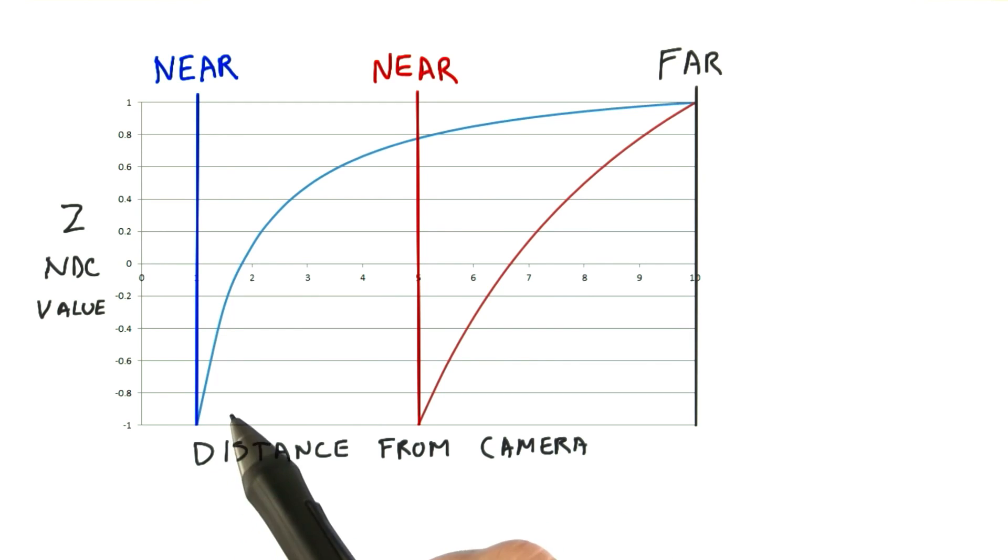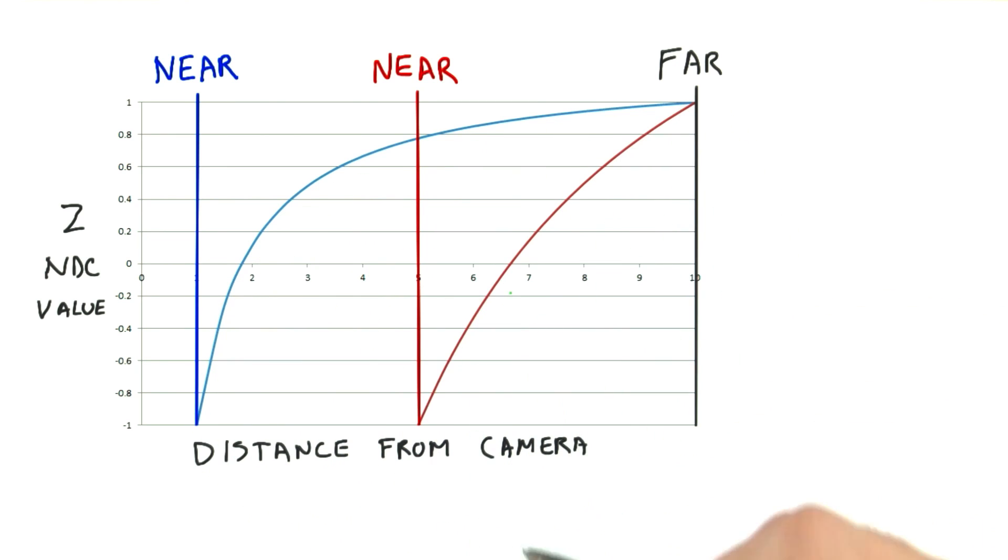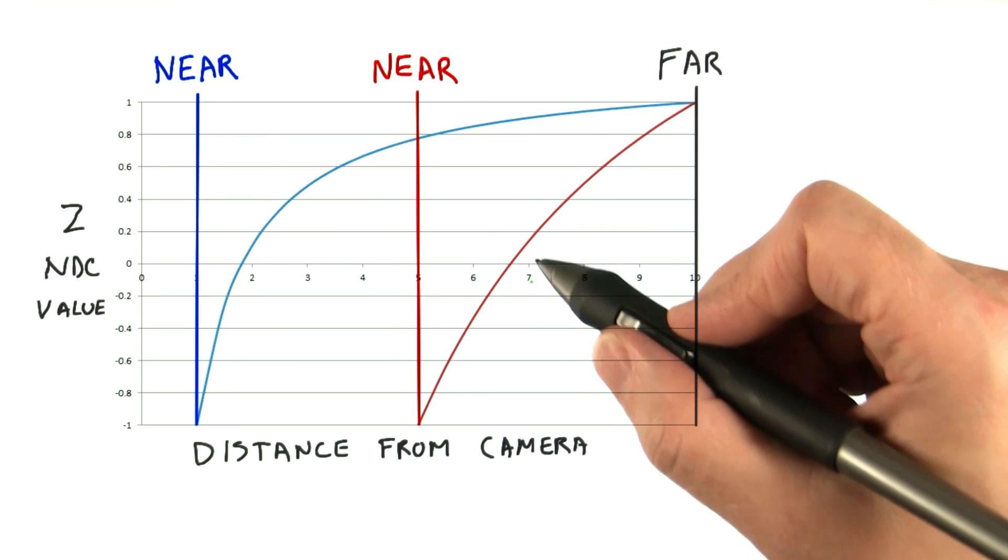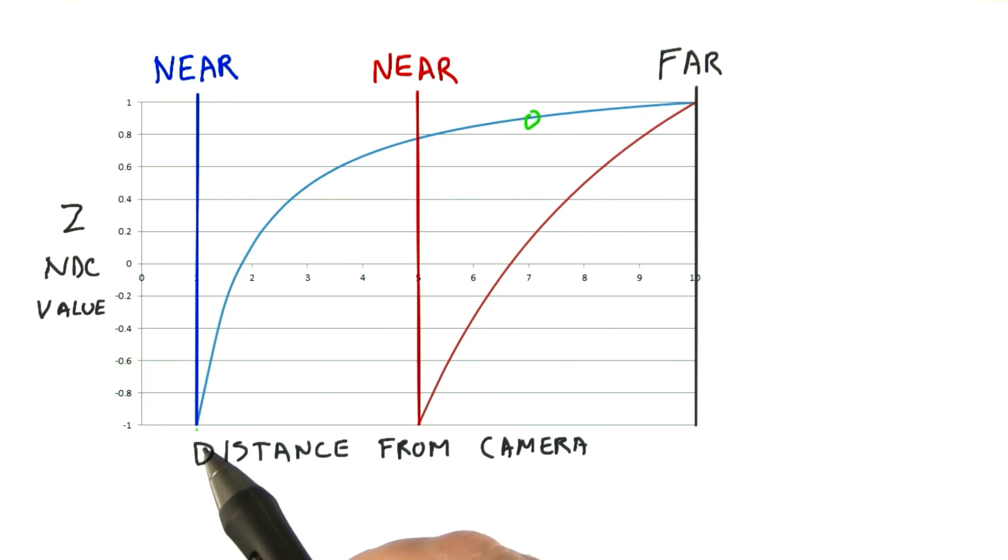Here's an example. Say we have our near plane at a distance of one unit away from the camera and the far plane 10 units away. The NDC's z-depth does not vary linearly, but instead forms a hyperbolic curve. For example, say we have an object at 7 units away. The NDC's z-value is about 9.0 when the near distance is one unit.